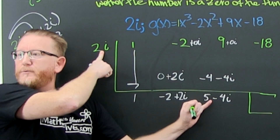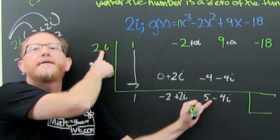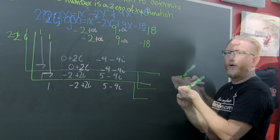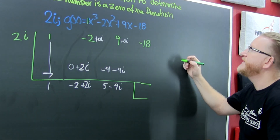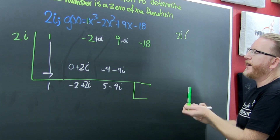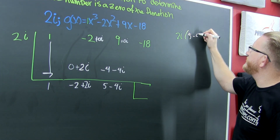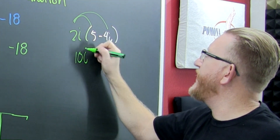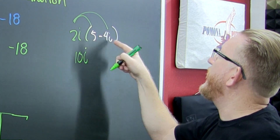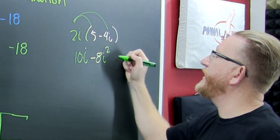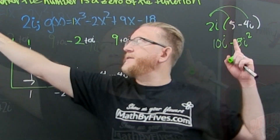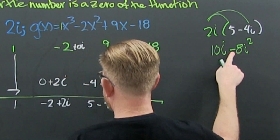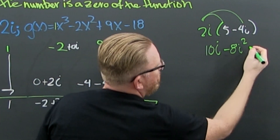Then I need to take that 2i and multiply it by that five minus 4i. So I take that 2i times that five minus 4i. Two times five gives me 10i. Then I have that 2i times that minus four, and that's a minus 8i squared. That i squared evaluates to be minus one, so that's going to be a minus and minus make plus — that's how I got that positive eight.